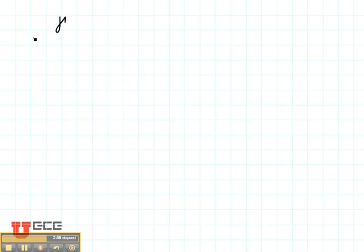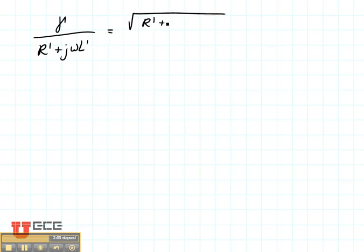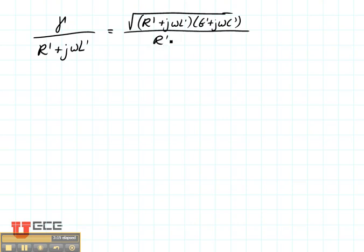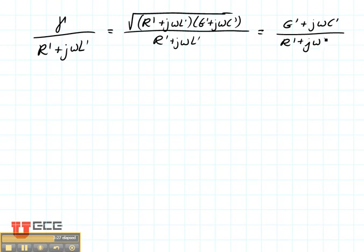Let's move to the next slide and figure out what gamma over R' plus j omega L' is. Remember that gamma was the square root of R' plus j omega L' times G' plus j omega C'. When we divide that by R' plus j omega L', this term is going to be the square root of G' plus j omega C' divided by R' plus j omega L'.